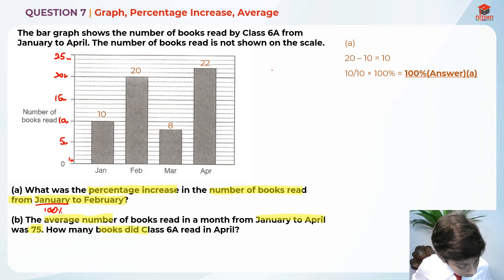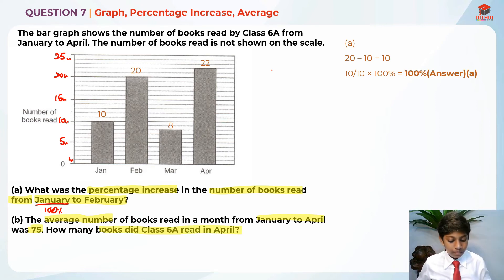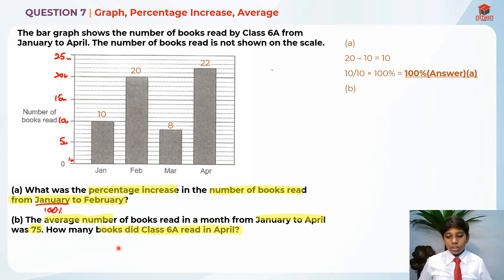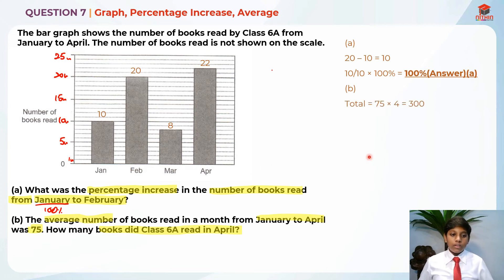How many books did class 6A read in April? First, I'm going to find the total. The total is the average times the number of months, so 75 times 4 months, which gives us 300.